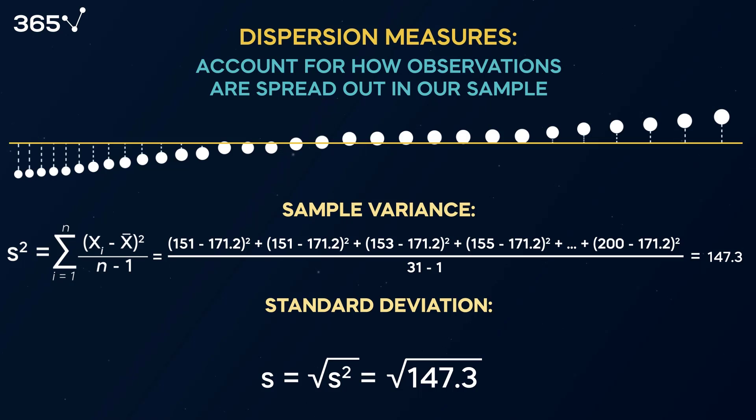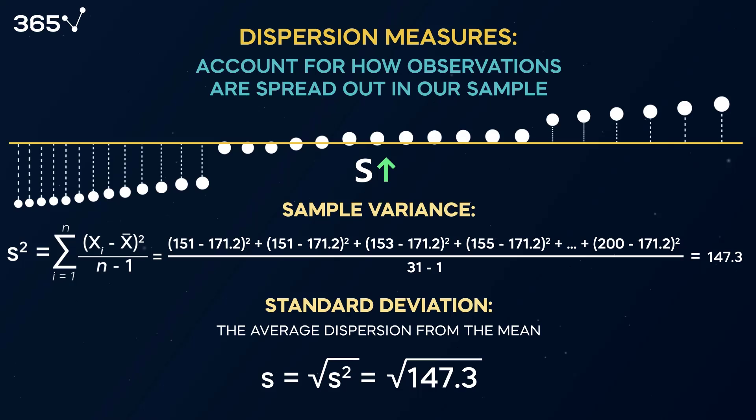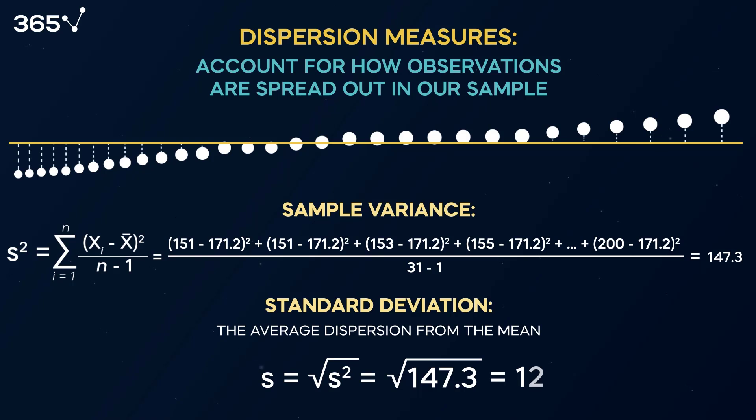Think of standard deviation as the average dispersion from the mean. If the standard deviation is high, we deal with a dataset with highly spread out observations. In contrast, a low standard deviation indicates the dataset observations are concentrated around the mean. In our case, the average dispersion from the mean is 12.1 centimeters.